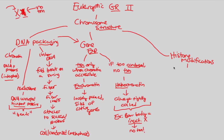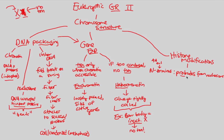Before we get further into these modifications, we have to understand where they're occurring. They're occurring on a region of the histone protein known as the N-terminus region. Remember, a histone is just a protein, and a protein has an amino end and a carboxyl end. The N-terminus — terminus meaning end — is the amino acid end of the protein. At this part of our histone protein, there is a protrusion that pokes out from the nucleosome structure, and this is what is known as a histone tail.